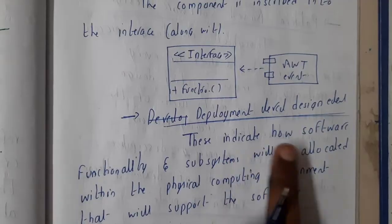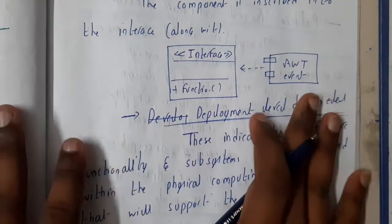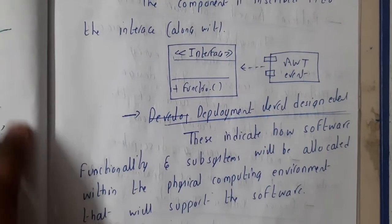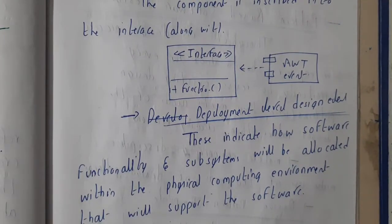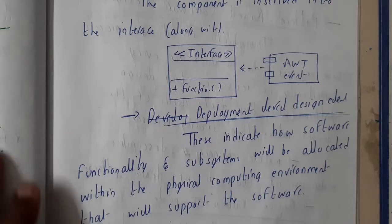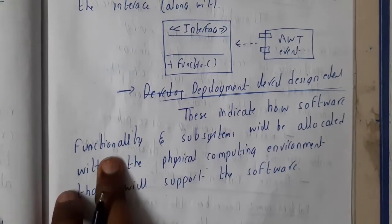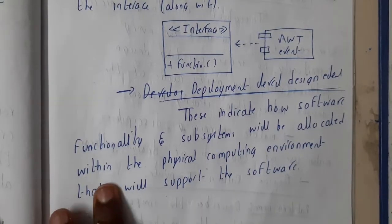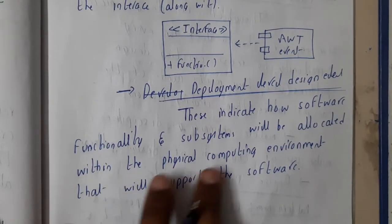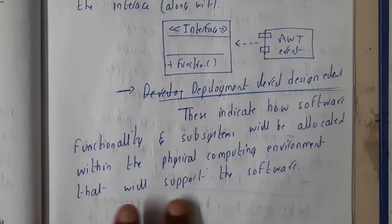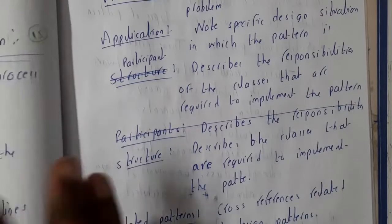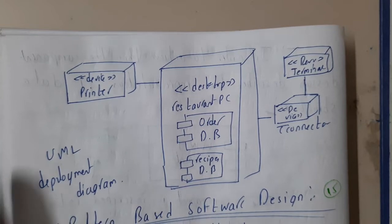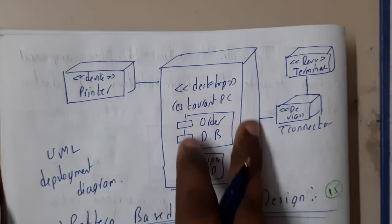After that, let us go through deployment level design. The next whole chapter we will be discussing about these five steps, so this is just an introduction. These indicate how the software functionalities and system or subsystems will be allocated within the physical computing environment that will support the software.